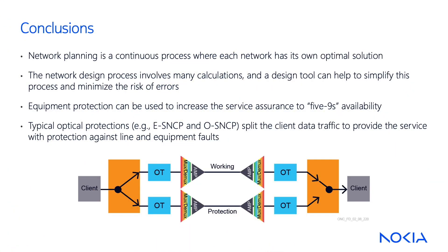Let's summarize what we've learned today. Network planning is a continuous process in which each network has its own optimal solution, depending on the requirements and some constraints. The network design process involves many calculations. The design tool can simplify this process and minimize the risk of errors. Service and equipment protection can be used to increase the service assurance to 5-nines availability. Typical optical protections, such as electrical SNCP and optical SNCP, split the client data traffic to protect the service against line and equipment faults.